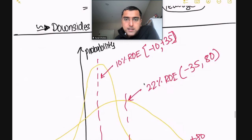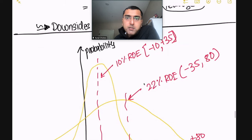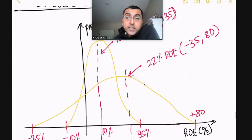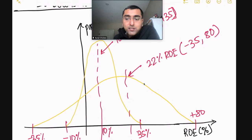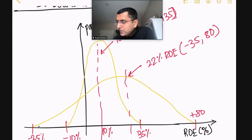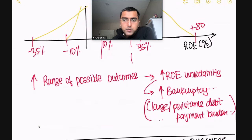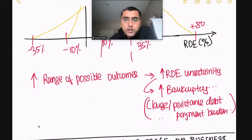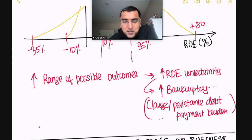A probability chart shows the same table's data: minus 10% to plus 35% ROE when unlevered, versus a 22% expected ROE when levered, but with a much wider distribution. There's a higher chance of bankruptcy when levered — if you're in a tough period and returns go negative, you're in serious trouble. If that uncertainty in returns persists for a long time during a recession, a large persistent debt payment burden will wipe you out. So leverage increases your return on equity, but if you cannot service your debt, you are in deep trouble.